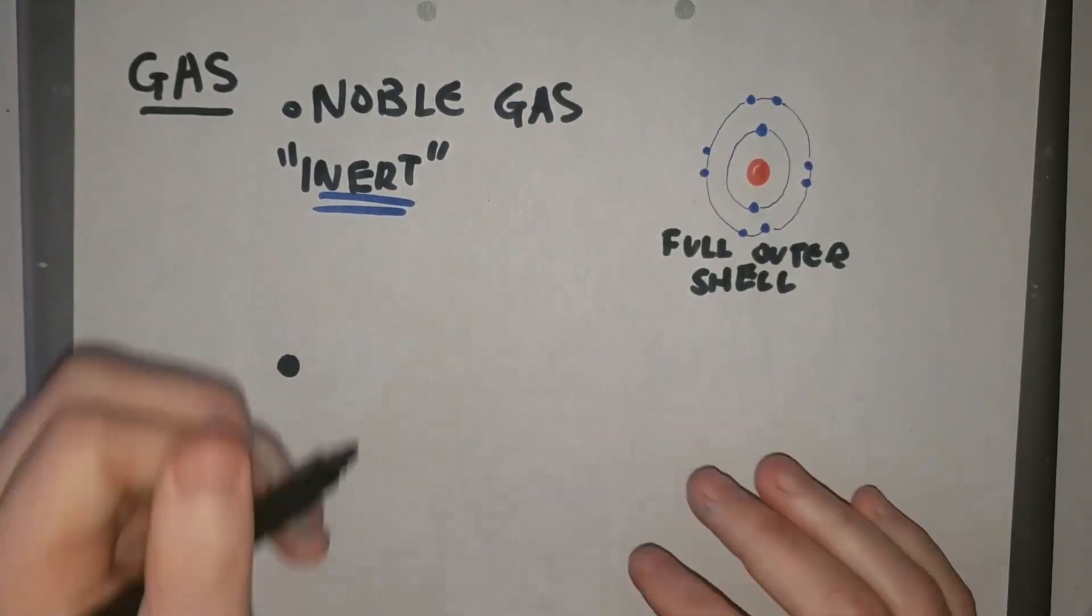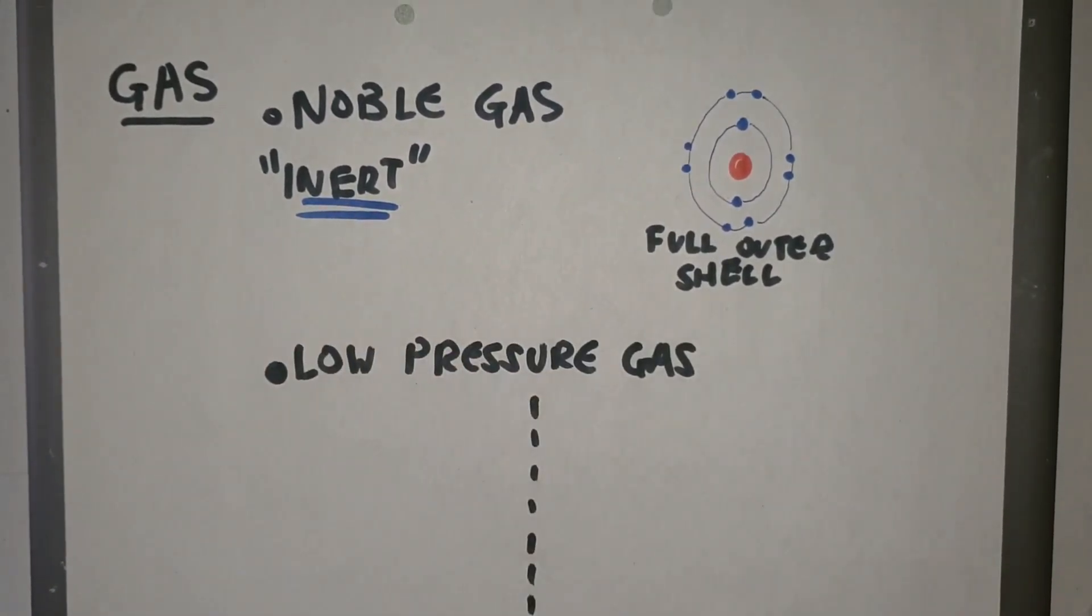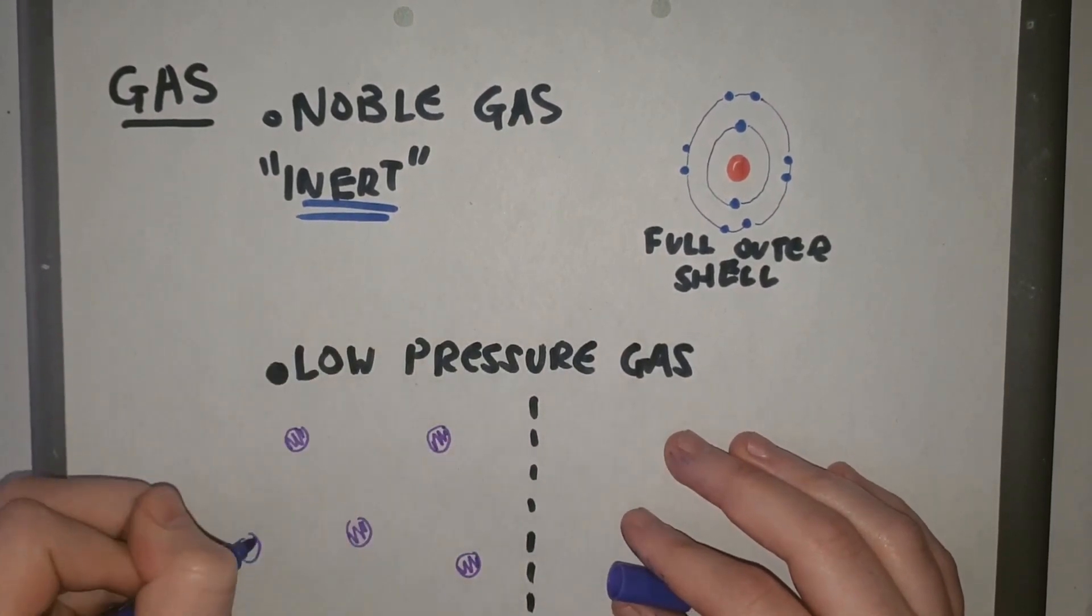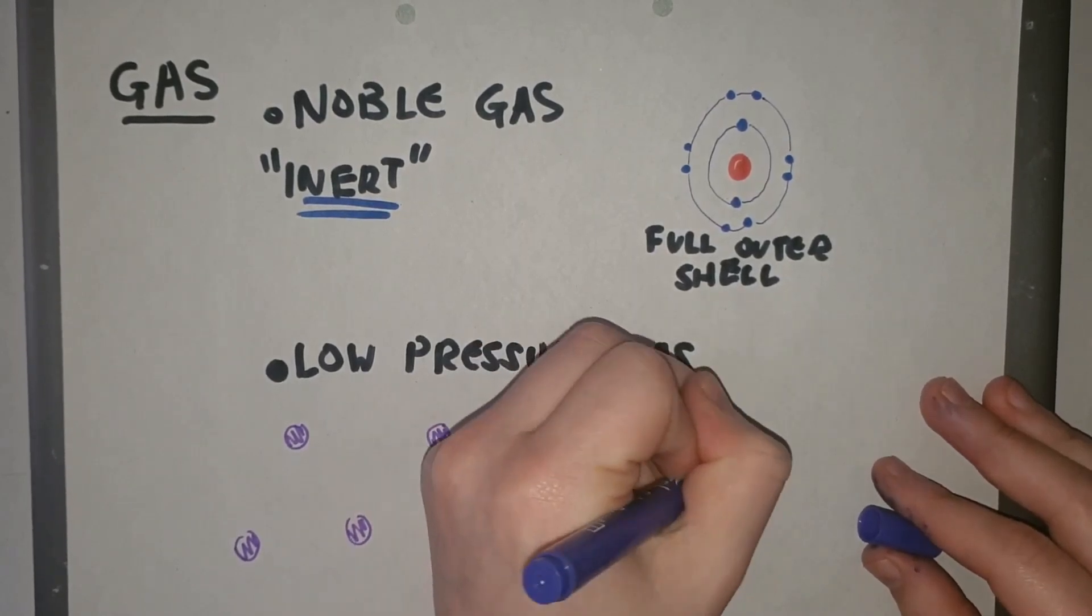The gas is also low pressure and this is so the electron can get to the anode easily. Imagine if you're doing your shopping and you're walking down a crowded high street you have to move out the way of other people, you bump into people and it takes longer to get to the shop you're heading for.